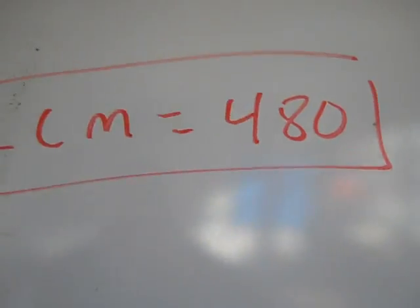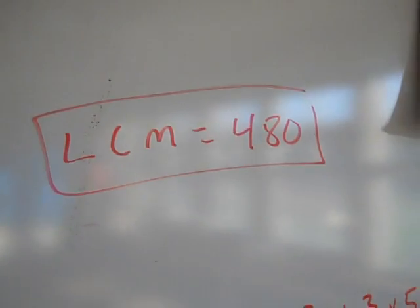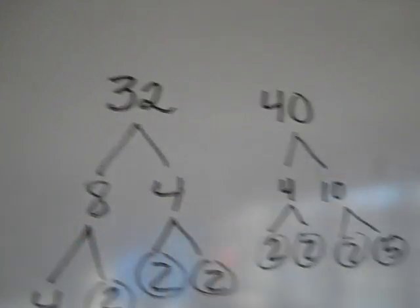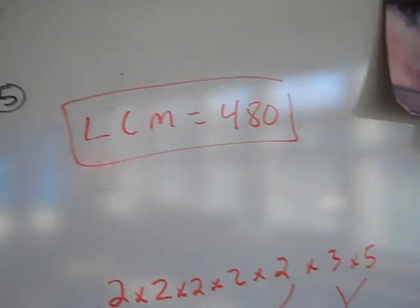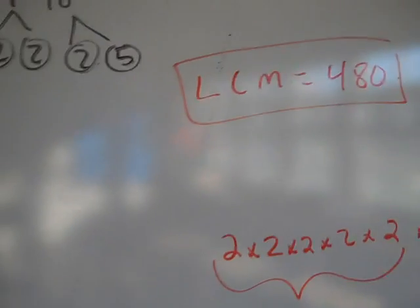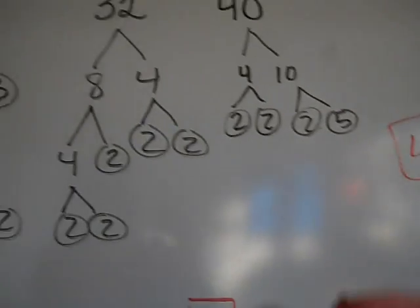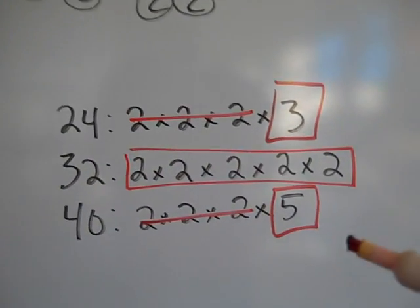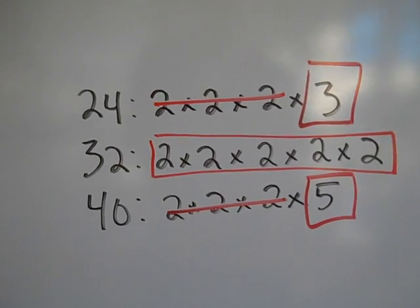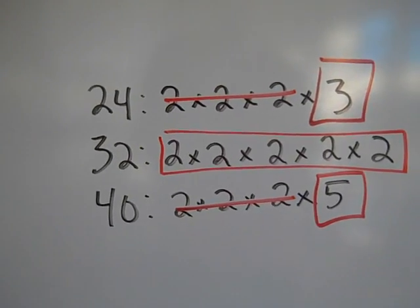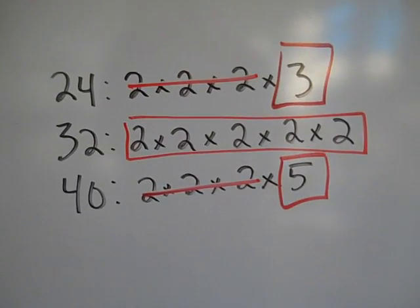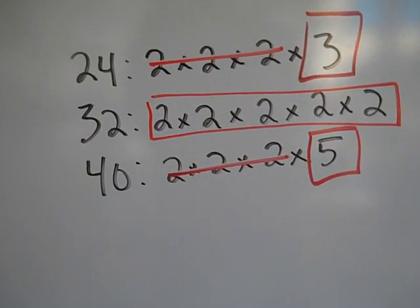There we go — 480. I found the LCM of 24, 32, and 40 pretty quickly. This is a great method to use for three numbers, even though the division ladder is better when you're only doing two. For three, you can't fail with the tree. Good luck!